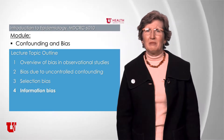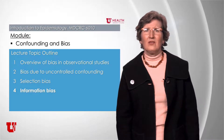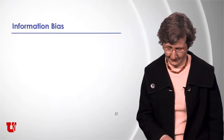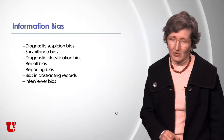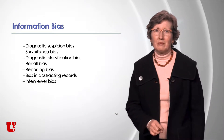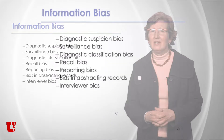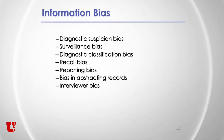For the module on confounding and bias, this is the lecture segment for information bias. There are a lot of different terms you might hear about the way data are collected in a study: diagnostic suspicion bias, surveillance bias, classification bias, recall bias. But I would just group all these together and call them information bias.